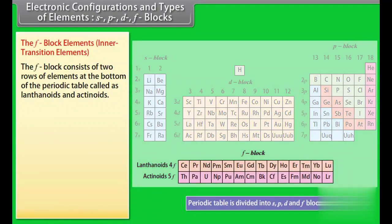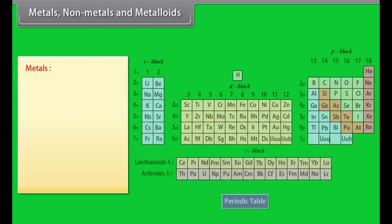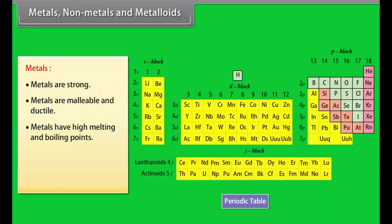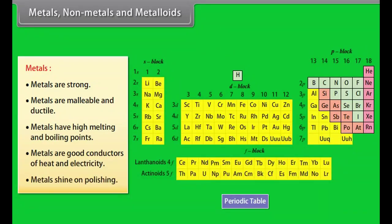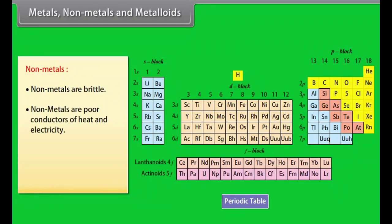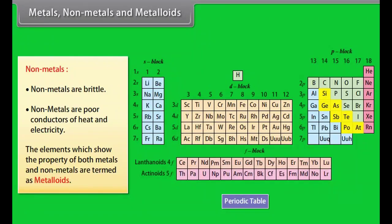The F block elements — Inner transition elements: The F block consists of two rows of elements at the bottom of the periodic table, called lanthanoids and actinoids. Metals are strong, malleable, ductile, have high melting and boiling points, are good conductors of heat and electricity, and shine on polishing. Non-metals are brittle and poor conductors of heat and electricity. Elements that show properties of both metals and non-metals are termed metalloids.